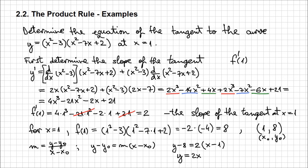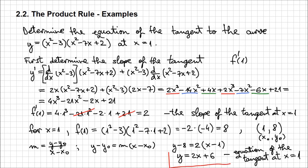Reorganizing into slope-intercept form, we get y equals 2x plus 6. This is the equation of the tangent when x equals 1 — exactly what we were trying to determine. You'll see it becomes a lot easier the more you practice. With this, we conclude the example. Thanks for watching.